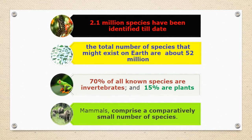Dear friends, the present geological era is perhaps the richest in biological diversity. About 2.1 million species have been identified till date, while many more species are believed to exist. According to the UN convention on environmental protection estimate, the total number of species that might exist on Earth are about 52 millions. Invertebrate animals and plants make up the most species — about 70 percent of all known species are invertebrates.